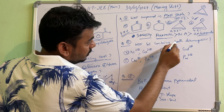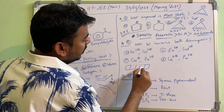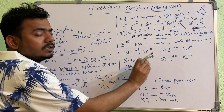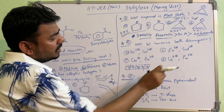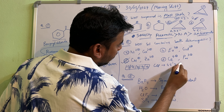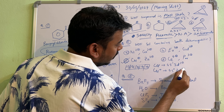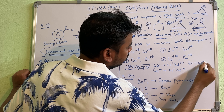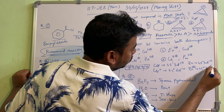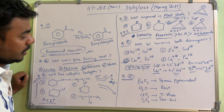The next question asks which set contains both diamagnetic species. For a diamagnetic species, all orbitals must be paired. Cu⁺ has the configuration 4s⁰ 3d¹⁰ — all orbitals paired, so it is diamagnetic. Zn²⁺ has the configuration 4s⁰ 3d¹⁰ — also all paired and diamagnetic. So in both Cu⁺ and Zn²⁺ we have 3d¹⁰, making them diamagnetic. Option C is the correct answer.